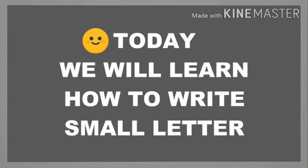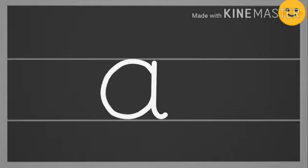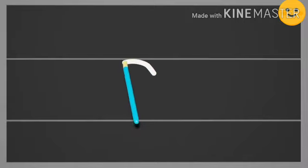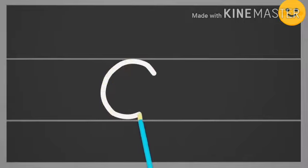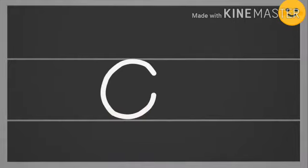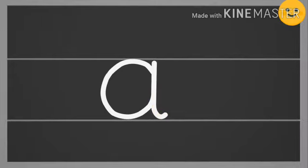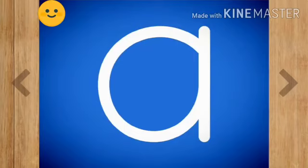Hello students, today we will learn how to write small letter A. Half a circle to the left, go a little up the line, touch the circle and come down. This is small letter A.